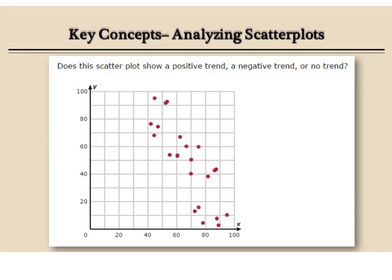So, here's a scatter plot, and it wants to know is it positive, negative, or no trend or correlation. As I'm looking at this, it is going in a loosely knit downward trend, so I would say that this is a negative trend.